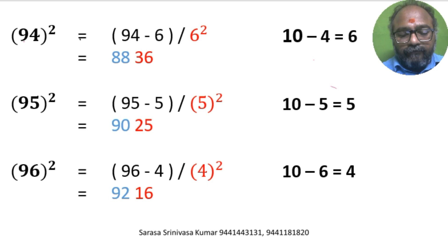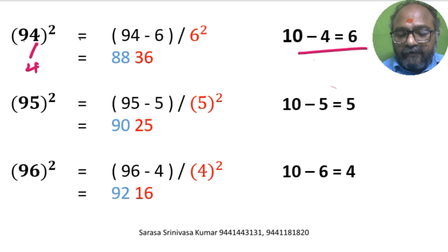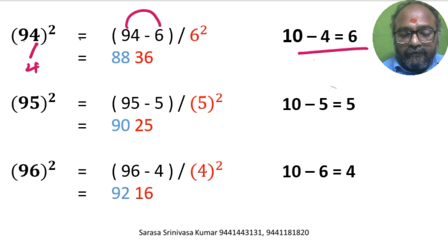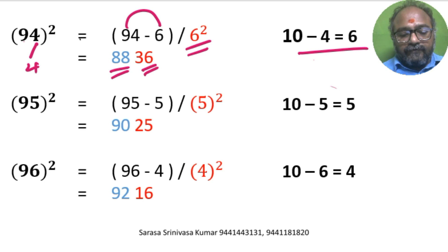94 square. Units digit is 4. 10 minus 4 is 6. 94 minus 6 is 88. 6 square is 36. So 88, 36 is the answer.